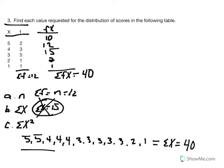So the sum of X, given those two processes, is equal to 40. Finally, Part C asks us to calculate the sum of X squared. Given our order of operations, we recognize that first we have to take all of our X values and square them, then — just as we did with the previous process — recognize that each X value, with the exception of x=2 and x=1, occurs more than once.